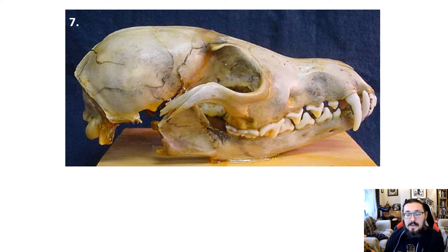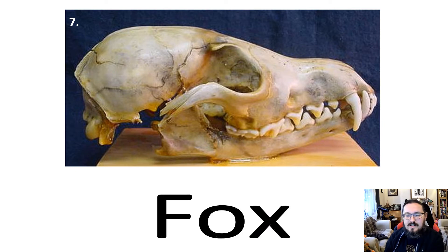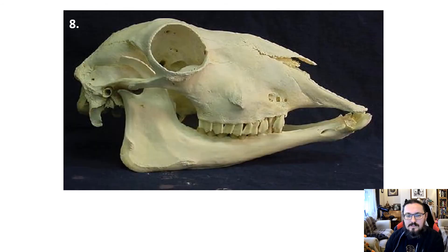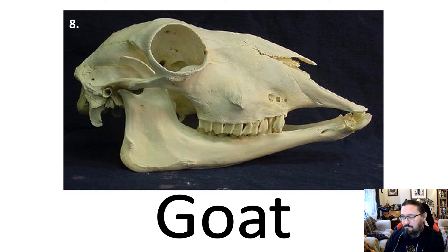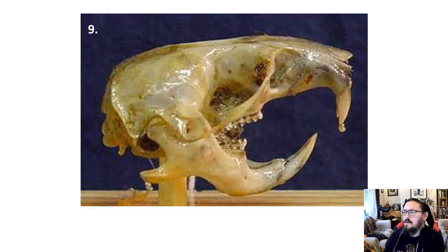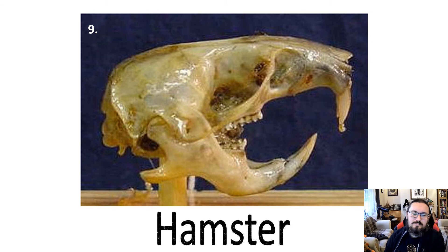The next one looks pretty fierce — a large carnivore with large canine teeth and big jaw muscles. Then something similar to what we looked at earlier: little incisors, a horny pad, lots of large flat molars, big diastema — that's a goat. Any idea what the next one might be? Pretty fierce again, big incisors — it's a hamster. They can be quite painful to be bitten by, with those massive incisors.